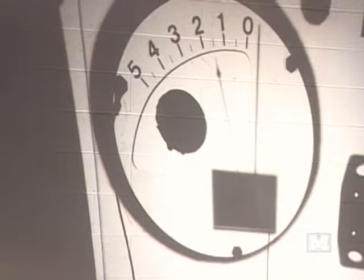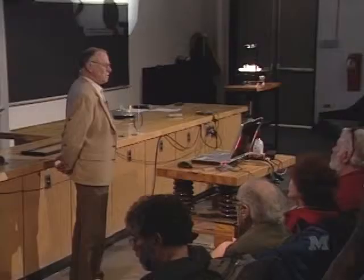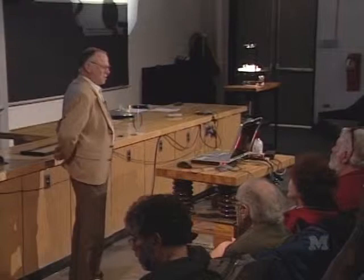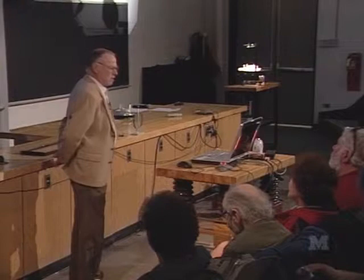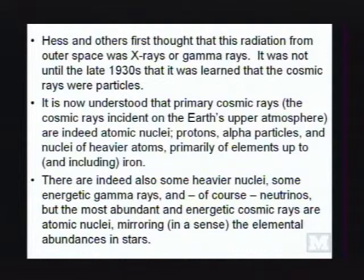At that time, in 1912 through the 1920s, it was thought that cosmic rays were really X-rays or gamma rays. It wasn't until the 1930s that it was learned that cosmic rays are indeed particles. It is now understood that primary cosmic rays are atomic nuclei — protons, alpha particles, and heavier nuclei up to and including iron. Heavier nuclei are also there but much less common. Neutrinos and sometimes very energetic gamma rays — trillions-of-volt gamma rays — are also included in cosmic rays.